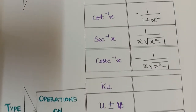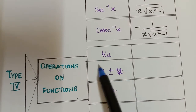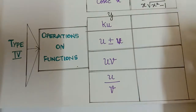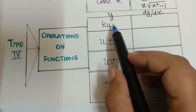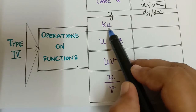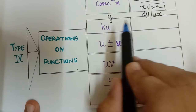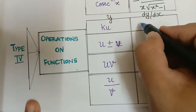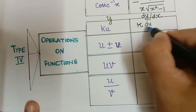Now we shall move on to type 4, which covers operations on functions — how to use differentiation when two functions are combined. If u is a function multiplied by a constant, when differentiated the constant remains the same, and we differentiate only the function u. So the result is the constant times du/dx. Remember: a constant alone differentiates to 0, but here the constant is alongside a function.